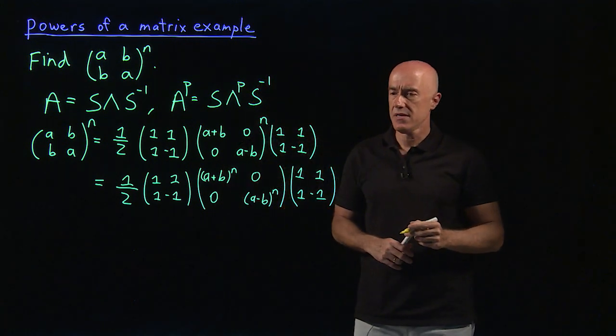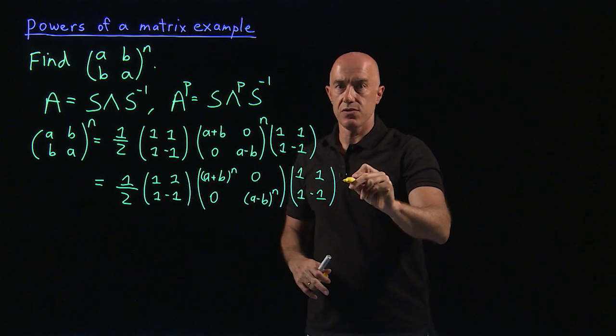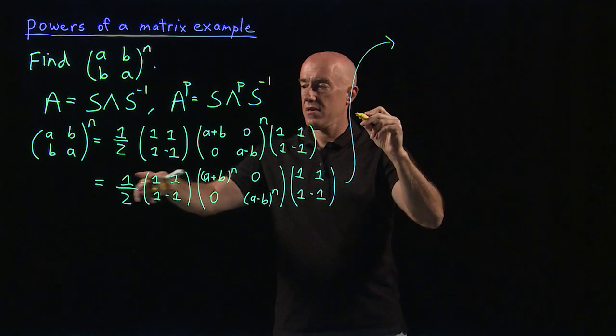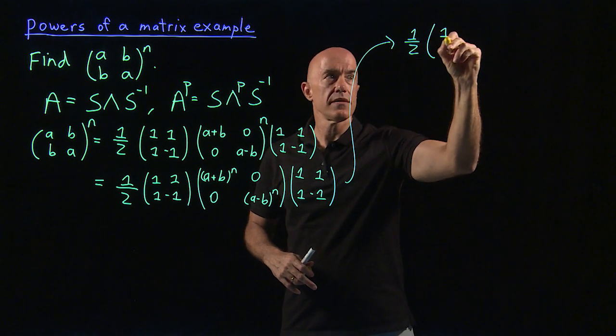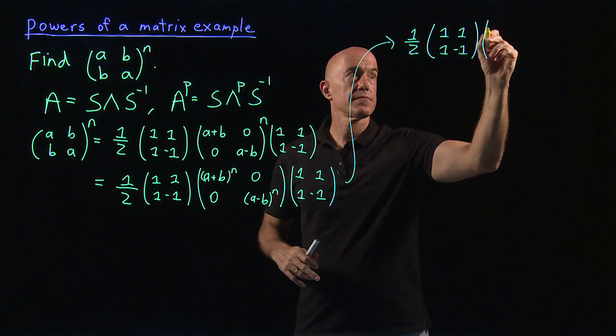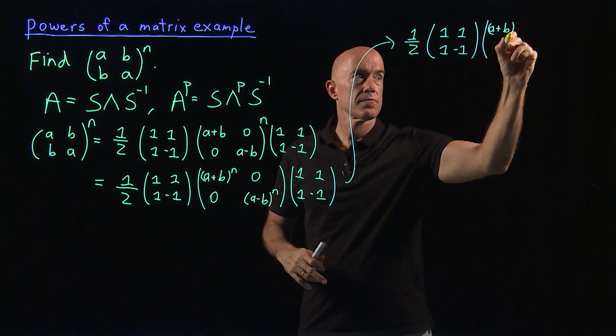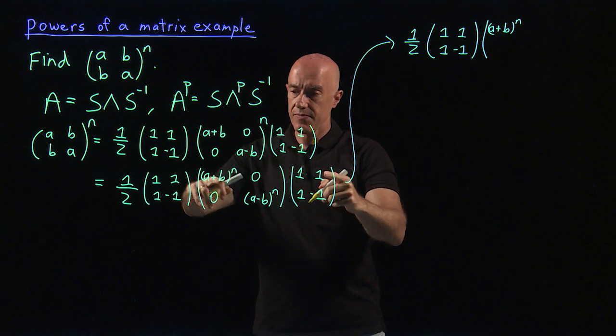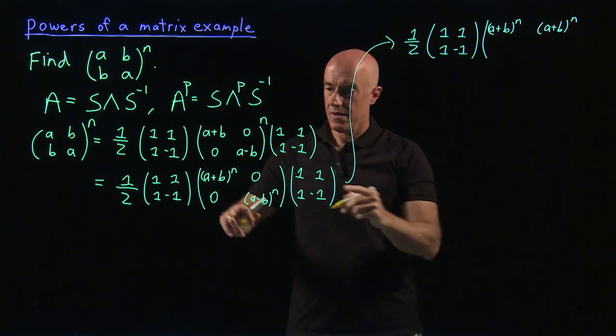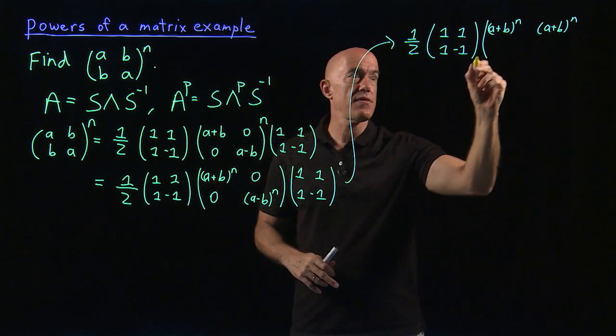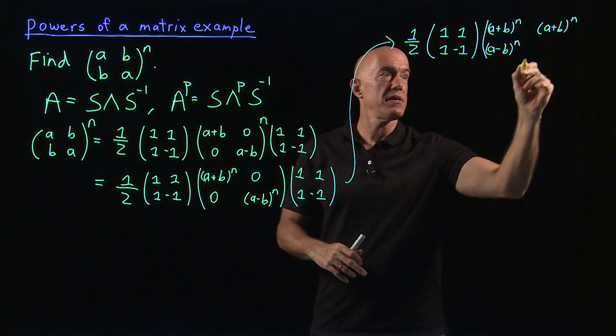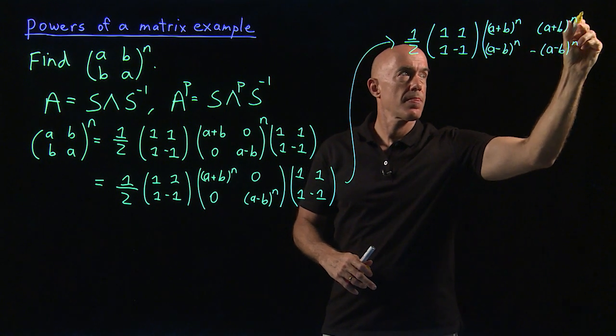Now we just have two matrix multiplications to do, so we can go ahead and do them. So let's do this one first. So we have 1 half times [1, 1; 1, minus 1], and then [(A plus B) to the nth plus 0, (A plus B) to the nth plus 0; 0 (A minus B) to the nth, 0 minus (A minus B) to the nth].